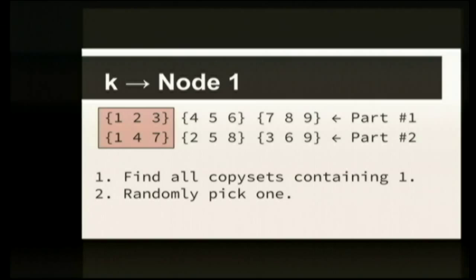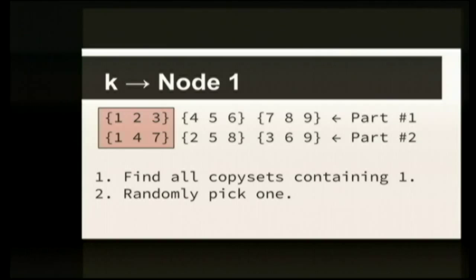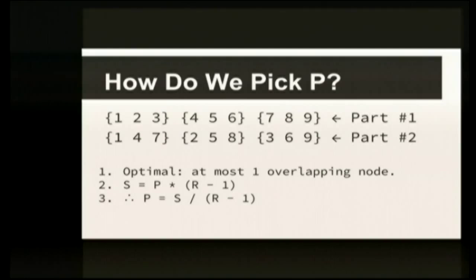The algorithm: we've got some key and we decide which node we'd like to serve as a primary. Let's say that's node one. The way we figure out where copies of that data should go is by randomly picking from the sets that contain node one — in this case sets {1,2,3} and {1,4,7}. We pick either one or the other but not both for the copies of that key.